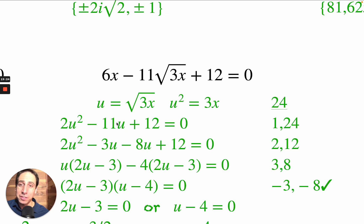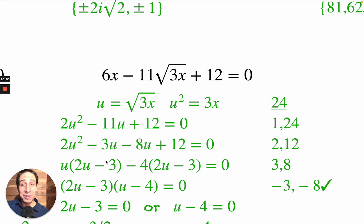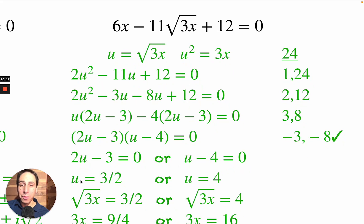Thanks to u-substitution this is easier now. 2 times 12 is 24. Looking at factor pairs of 24, I need the one that adds up to minus 11: that's negative 3 and negative 8. So we rewrite minus 11u as minus 3u minus 8u. Factoring: u(2u minus 3) and minus 4(2u minus 3). We get (2u minus 3)(u minus 4) equals 0. Solving: u equals 3 halves or u equals 4.